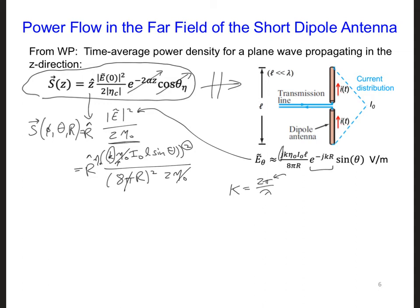And we can plug in for eta naught. We're going to have 377. And all in all, if you put all this together, we're going to get r hat 11.78 i naught l over r lambda squared sine squared theta.